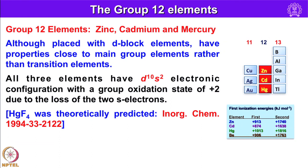All three elements have a group oxidation state of +2 due to the loss of the two s electrons. HgF₄ was theoretically predicted in 1994. Looking at the ionization energies for zinc, cadmium, and mercury — the first ionization energies are given along with beryllium: 913, 874, 1013, and 906 kilojoules per mole respectively.